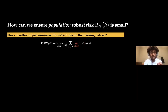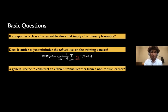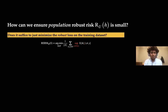Let's start with the second question. Our goal is to ensure good population robust error, so a natural approach is to minimize the robust loss on the training dataset — picking a predictor from the class that minimizes the robust loss on the sample. This is natural, and we know it provably works in the non-robust setting via ERM. There is no requirement of efficiency on the adversary — it's worst-case, all powerful, as long as it sticks to the predetermined adversarial sets.